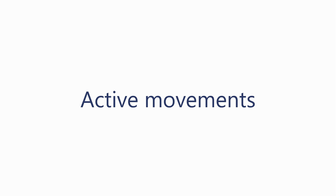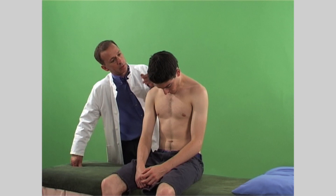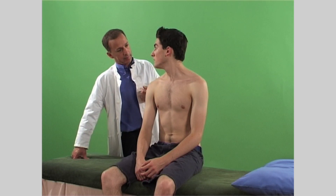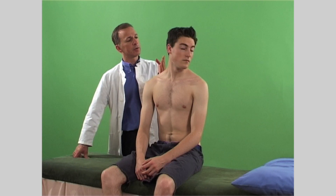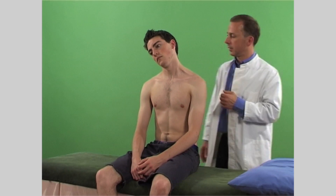Ask the patient to perform the following active movements to their full range: flexion, extension, rotation, and lateral flexion. Instructions include: drop your chin down to your chest as far as possible, now look at the ceiling, look this way, and now the other way. Ask them to let you know if any of the movements produces pain. You should change this order if it is anticipated that one movement will be particularly painful — for accuracy, the painful movement should be performed last.